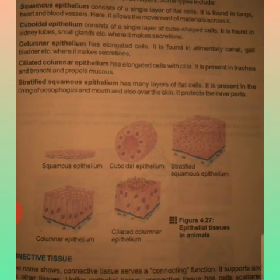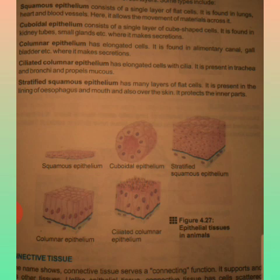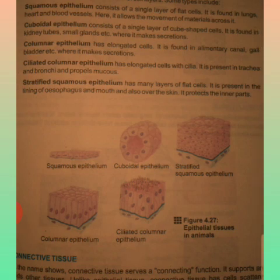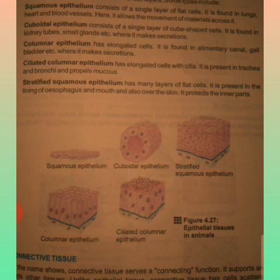Now open page number 75 of your textbooks. Epithelial tissue covers the outside of the body and lines the inner organs and cavities. The cells of this tissue are tightly packed together with no space between them. There is further categorization depending upon the number of cell layers: squamous, cuboidal, columnar, ciliated columnar, and stratified squamous epithelium.